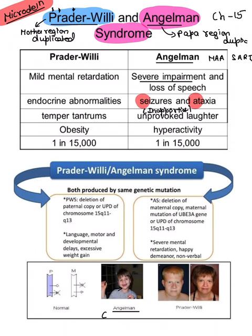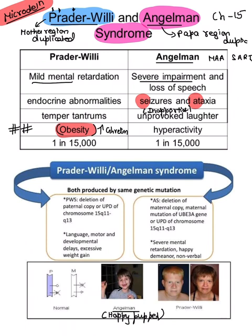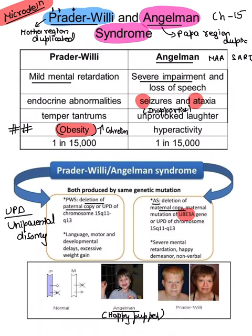Angelman syndrome is also known as 'happy puppet' due to the excessive laughter. For Prader-Willi: paternal copy is deleted; patients are obese due to increased ghrelin — an important MCQ point. There is mild mental retardation and endocrine abnormality. This is also called uniparental disomy. For Angelman: maternal deletion, the gene involved is maternal mutation of the UBE3A gene, with severe mental retardation, happy facies, and excessive weight gain in Prader-Willi.